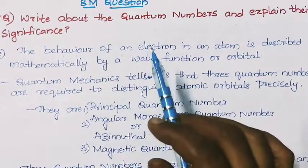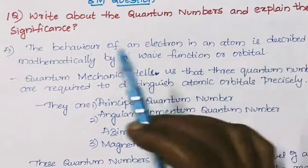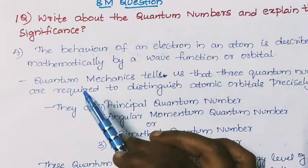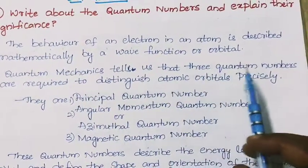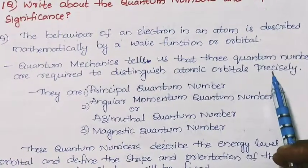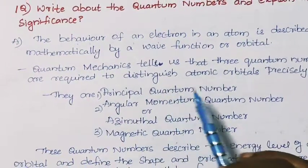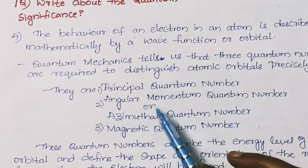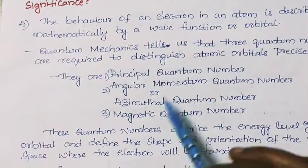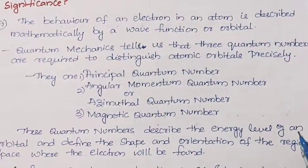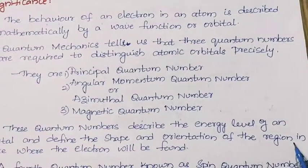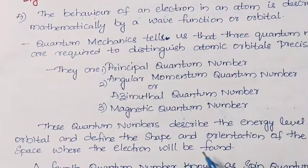The behaviour of an electron in an atom is described mathematically by a wave function or orbital. Quantum mechanics tells us that three quantum numbers are required to distinguish atomic orbitals precisely. They are: the principal quantum number, the angular momentum quantum number (also called the azimuthal quantum number), and the magnetic quantum number. These quantum numbers describe the energy level of an orbital and define the shape and orientation of the region in space where the electron will be found.